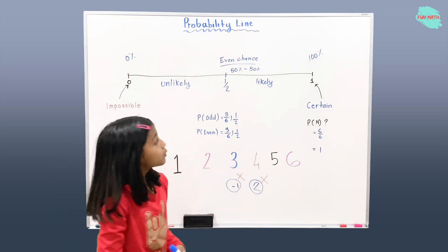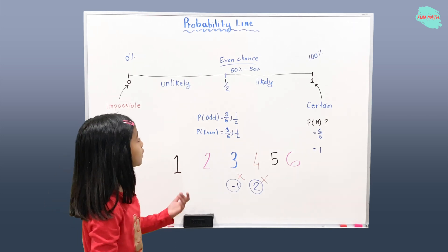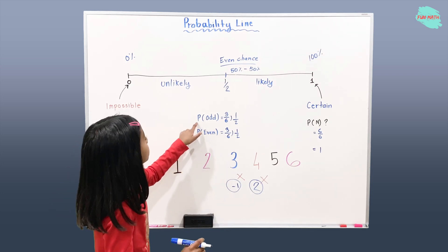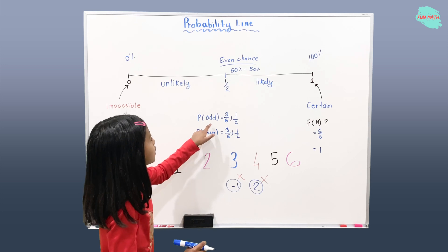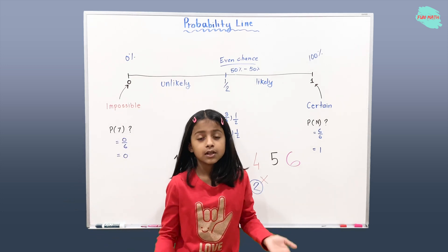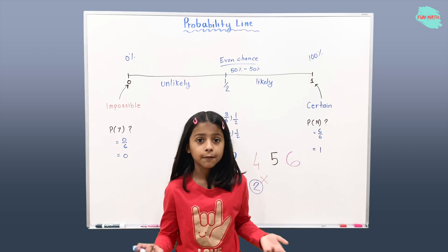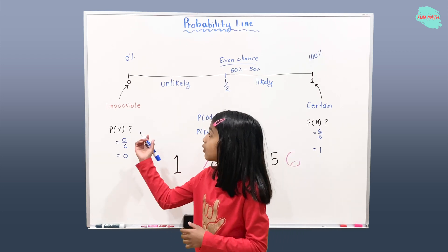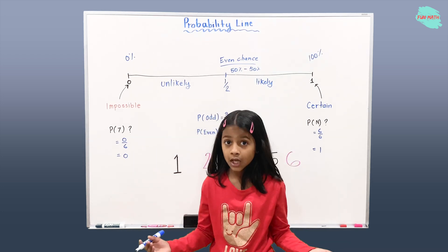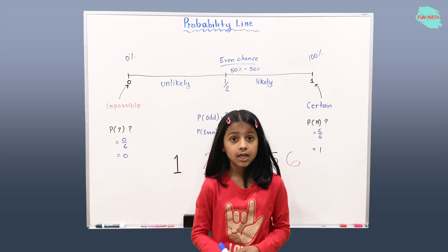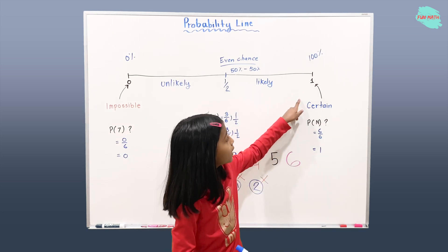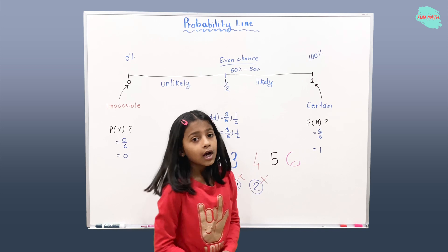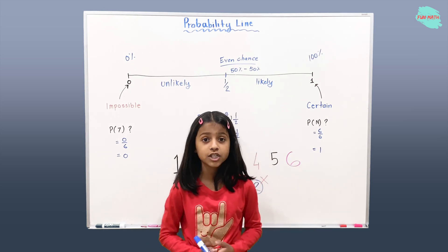So there is an even chance that the probability of getting an odd number can occur. Let's review what we learned today. We learned about the probability line. On one side we had zero, which is an impossible event, and we had an example of it. We had number one, which was a certain event, and we had an example of that too. I hope you learned something from this video. Thanks for watching, bye!